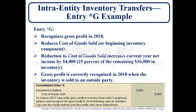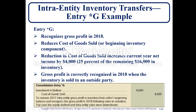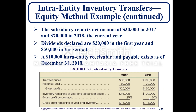Entry G recognizes gross profit in 2018 and reduces cost of goods sold — the beginning inventory component. The reduction in cost of goods sold increases current year net income by $4,000. Gross profit is correctly recognized in 2018 when the inventory is sold to an outside party. This entry removes the 2017 intra-entity gross profit in inventory from the seller's beginning balance and recognizes gross profit in 2018 following sales to outsiders. Using the equity method with downstream intra-entity sales, here you have a debit to investment in Bottom and a credit to cost of goods sold, following the information from Exhibit 5.2.